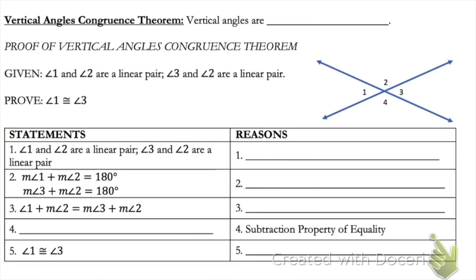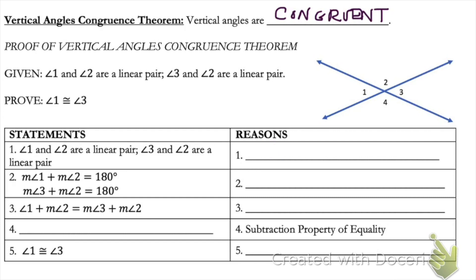The last theorem we're going to talk about is the vertical angles congruence theorem, which says that vertical angles are always going to be congruent. Remember, vertical angles are those angles created by two intersecting lines. Angles one and three are a vertical angles pair, and so are angles two and four. We're going to go ahead and do a geometric proof of the vertical angles congruence theorem.